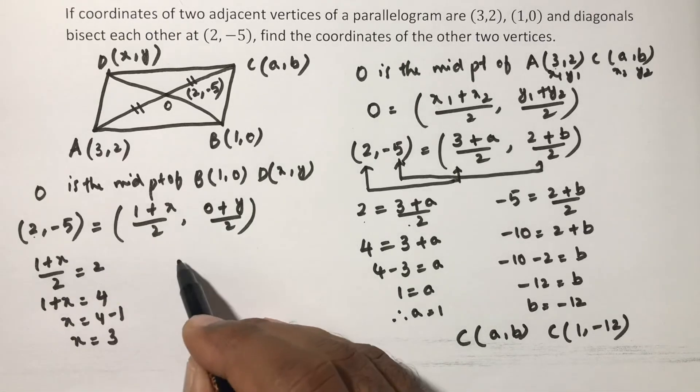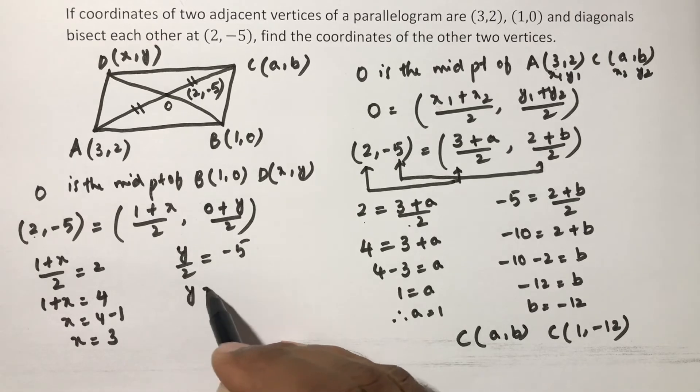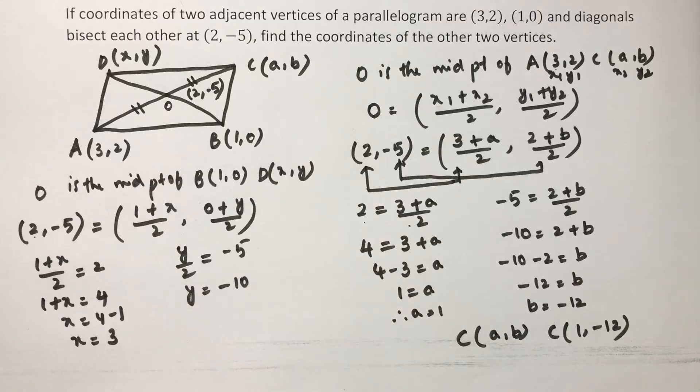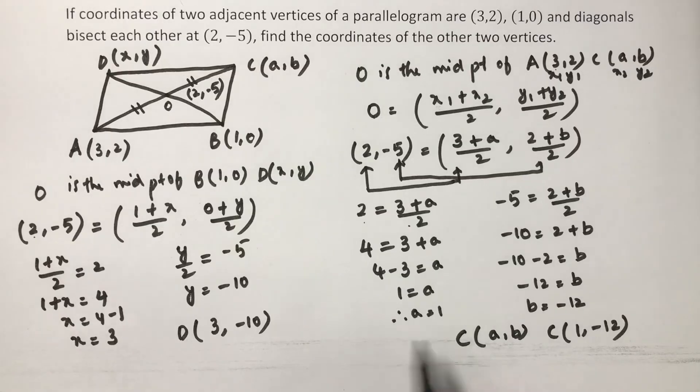Now equate ordinate with ordinate. y/2, 0+y is y, by 2 is -5, so y equals -10. So the vertex D is (3,-10), because D is nothing but (x,y). So in this way we can find the other two vertices C and D.